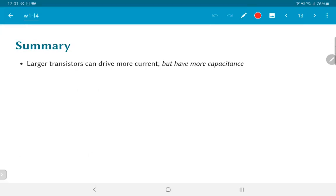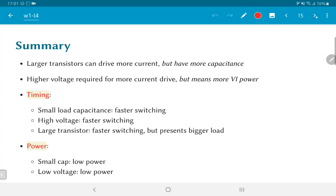So, to summarize, larger transistors can drive more current, but they tend to have more capacitance. Higher voltage is required for more current drive, but in turn means that the VI power will increase. Therefore, when we combine everything together, as far as timing is concerned, small load capacitance is good. It would mean faster switching, but on the other hand, it probably also means smaller transistors. High voltage would mean faster switching, which from the timing point of view is good. Large transistors would be able to deliver higher currents, but on the other hand, that contradicts the first point of small load capacitance because if I use large driver transistors, that in turn would be a large load for the previous stage.